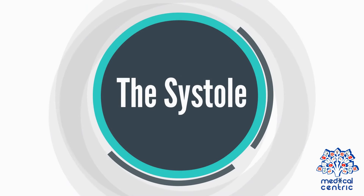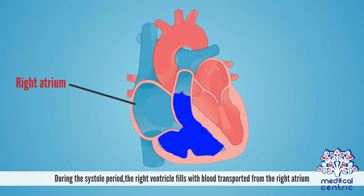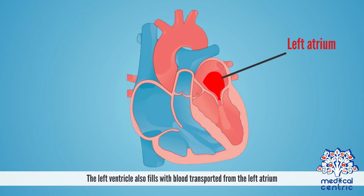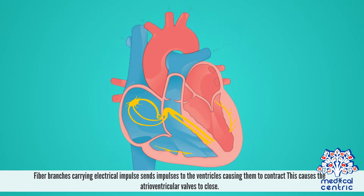During the systole period, the right ventricle fills with blood transported from the right atrium, and the left ventricle also fills with blood transported from the left atrium. Fibre branches carrying electrical impulses send impulses to the ventricles, causing them to contract. This causes the atrioventricular valves to close.